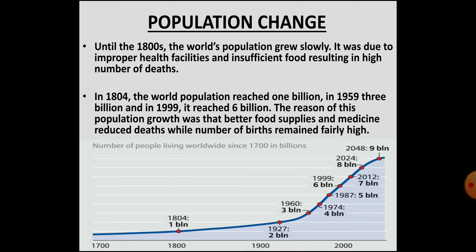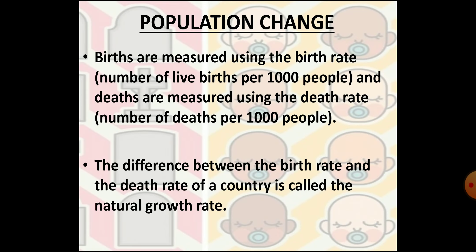The reason for this rapid growth was that due to improved food supplies and better medical facilities, the number of deaths reduced, while the number of births continued to stay high. The number of births is measured using birth rate — that is, the number of births per 1000 people. Deaths are measured using death rate — the number of deaths per 1000 people. The difference between the birth rate and the death rate of a country is called the natural growth rate of population. The main reason for the increase in the world's population is the fast increase in the natural growth rate.